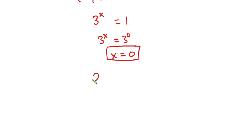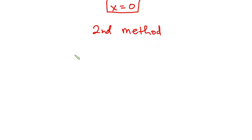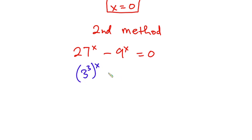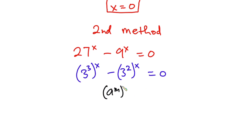Now let's begin with the second approach. We have 27 to the power x minus 9 to the power x is equal to 0. From this approach, 27 is the same as 3 to the third power, and 9 is the same as 3 to the second power, all to the power x. From indices, if we have a to the power m, all to the power n, this is the same as a to the power m times n. So we can write the equation as 3 to the power 3x minus 3 to the power 2x equals 0.